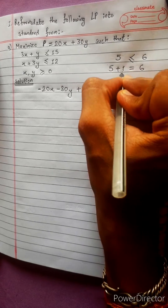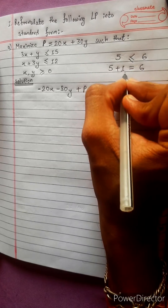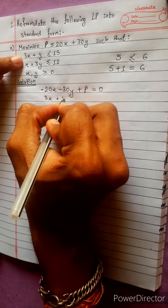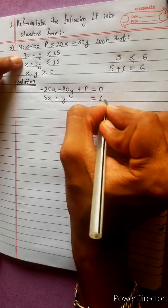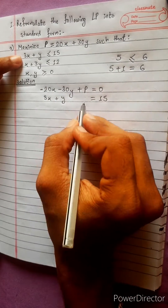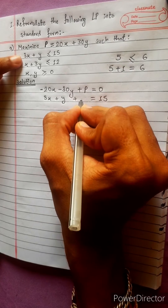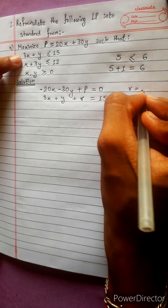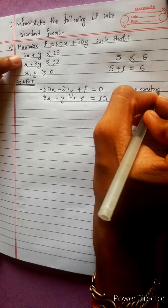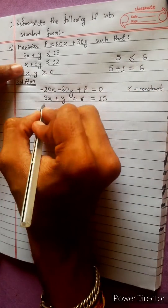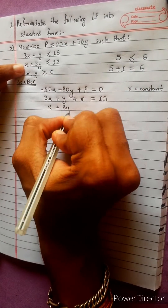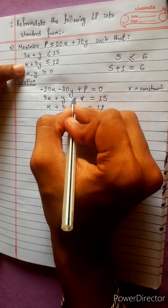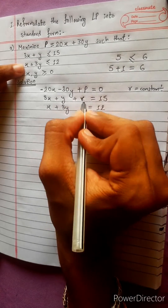This is equal to something k plus. This is 3x plus y, equal to 15. This is k plus y, k plus constant number. This is r equals to constant. This is x plus 3y, equal to 12. This is k plus y, r equals to another number.